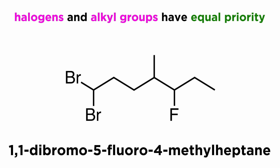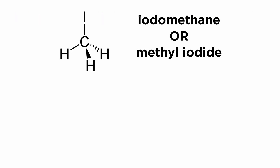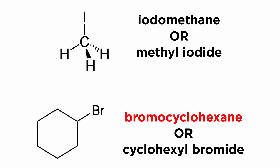We can clearly see how halogen functional groups integrate seamlessly into the rules we already know. We should also note that sometimes we refer to small alkyl halides by other names — so iodomethane is sometimes called methyl iodide, and bromocyclohexane might sometimes be called cyclohexyl bromide, that sort of thing.